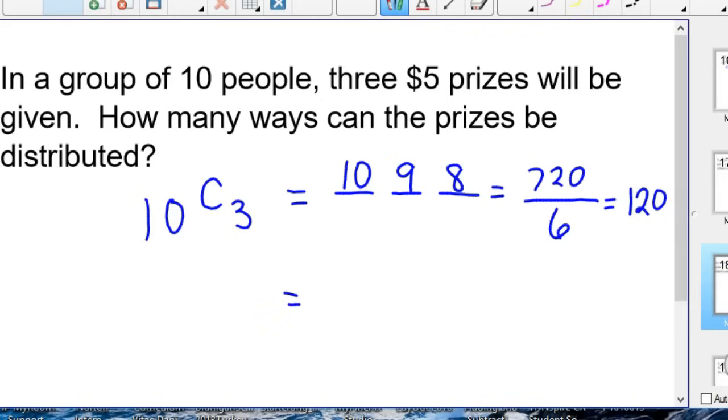And if you look at the formula, it's 10 factorial divided by 7 factorial, just like a permutation. But you'd also divide by 3 factorial. And that gives you 120. I'm not going to go through the multiplication on that.